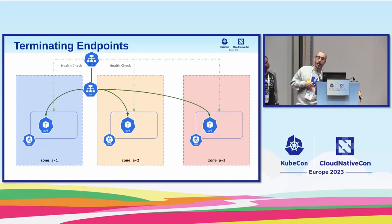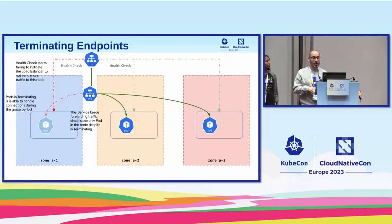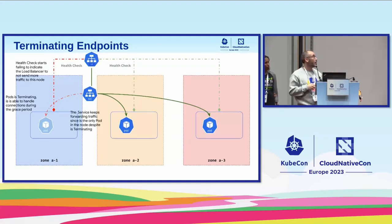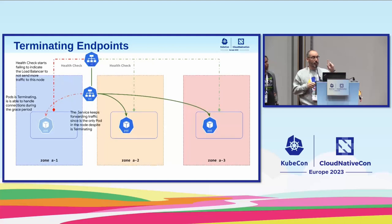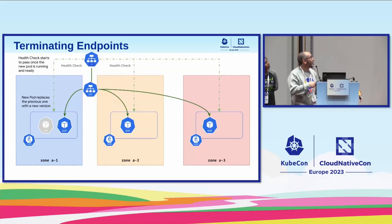When you use external traffic policy local, the load balancer polls nodes to know which node has a pod. When a deployment rollout starts and a pod begins terminating, it's important that your application handles the SIGTERM signal so it can still process traffic. During the period while health checks start to fail, it's still going to serve traffic. Before this feature, because we didn't have this state in the endpoint slice object, kube-proxy automatically removed the pod and all traffic was blackholed. With this feature, kube-proxy knows the pod is terminating but able to handle traffic, so it lets the pod keep serving traffic while telling the load balancer not to send new traffic — giving zero downtime on rollout.